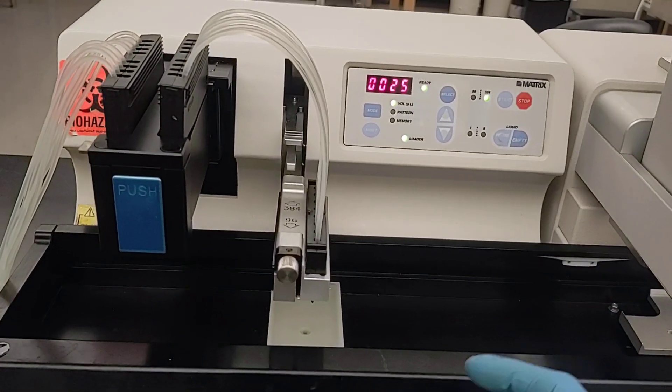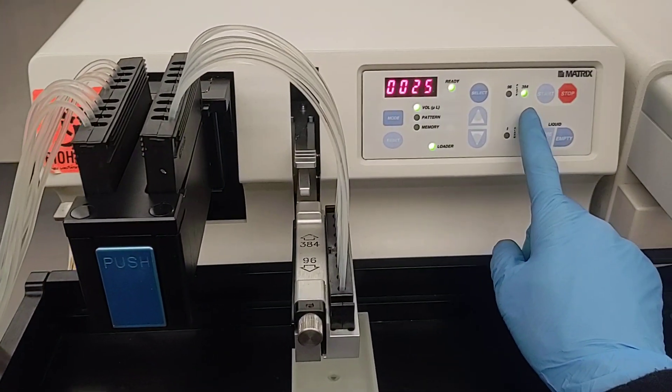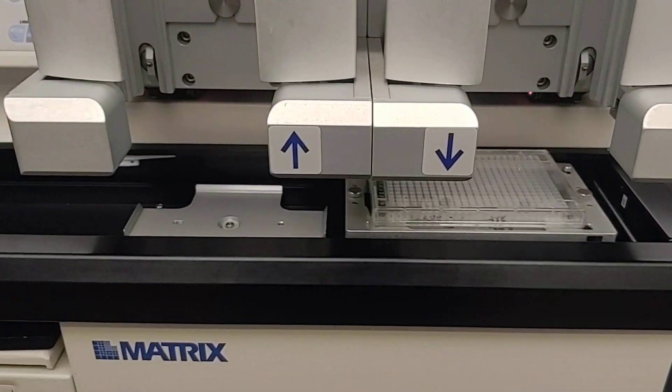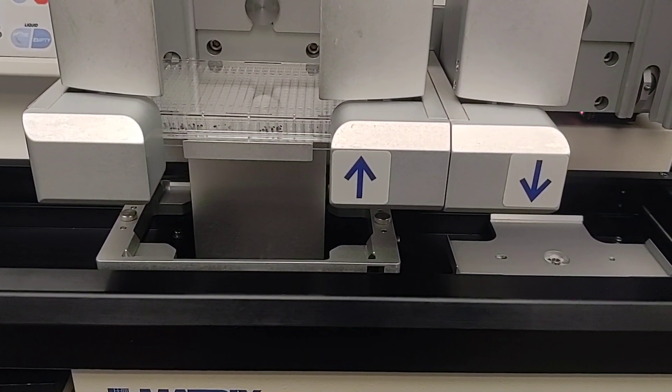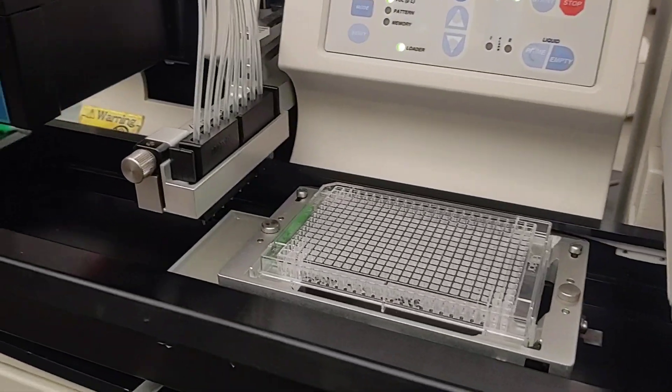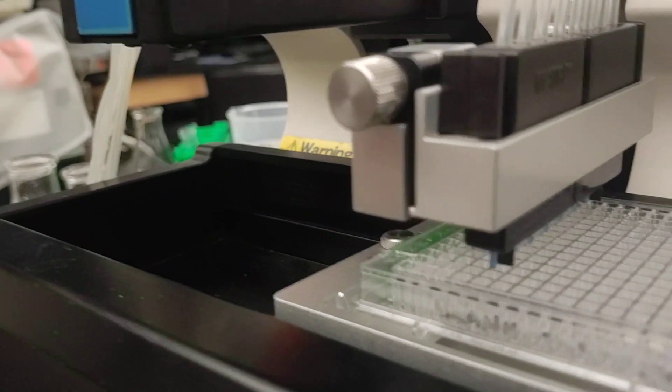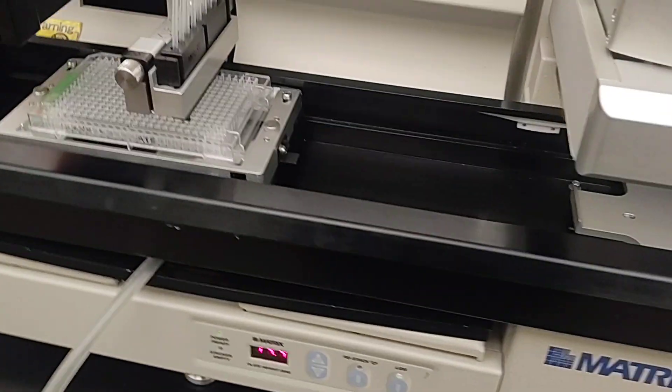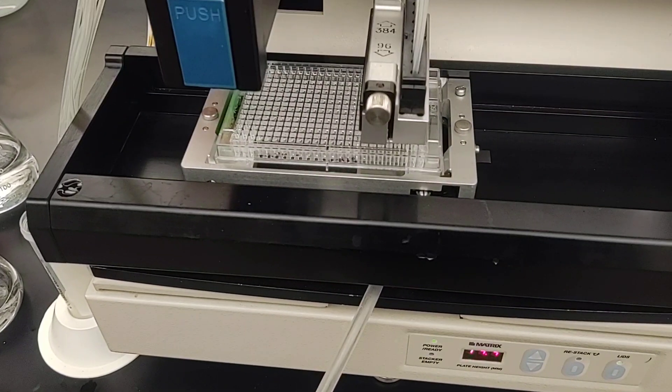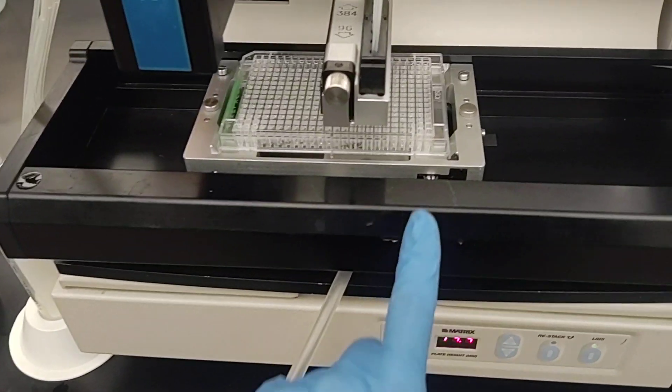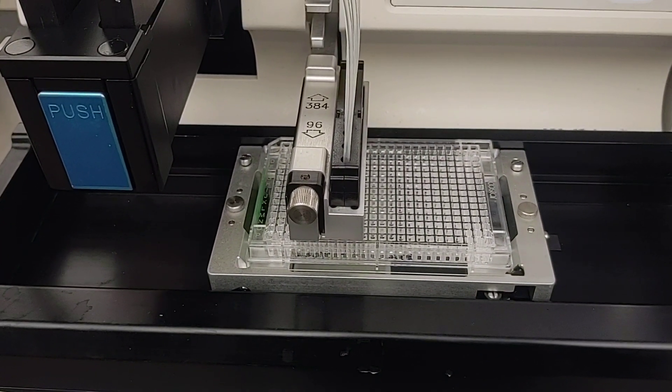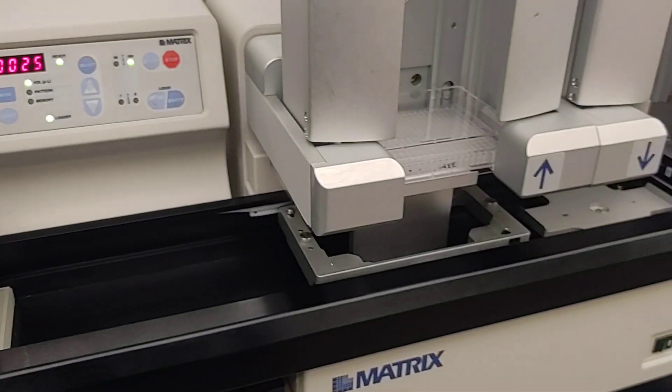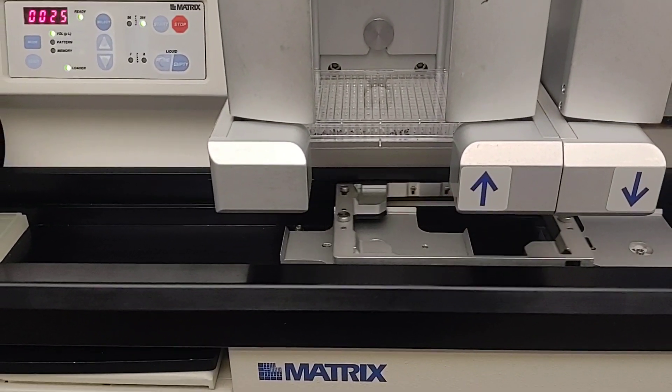And when we hit start, the plate carrier is going to come up, pick up the plate, and then it goes over here to drop off the lid if you have that activated. And then it comes over here to dispense. And it will continue to do so. The default for a 384 well plate is to not dispense into the last two wells since those are often used for controls. If you don't want it to be done like that, then you can use a different program from the memory. And it comes up here and drops off the plate and now has its lid back on.